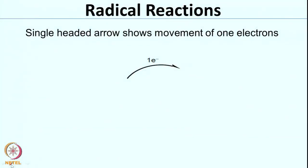Now we look at another class of reactions. Radical reactions are different from polar reactions — here you talk about single electron species called radicals. To show the movement of single electrons, a single-headed arrow is used. For polar reactions we used a double-headed arrow: a double-headed arrow indicates movement of 2 electrons, but a single-headed arrow indicates the movement of 1 electron.